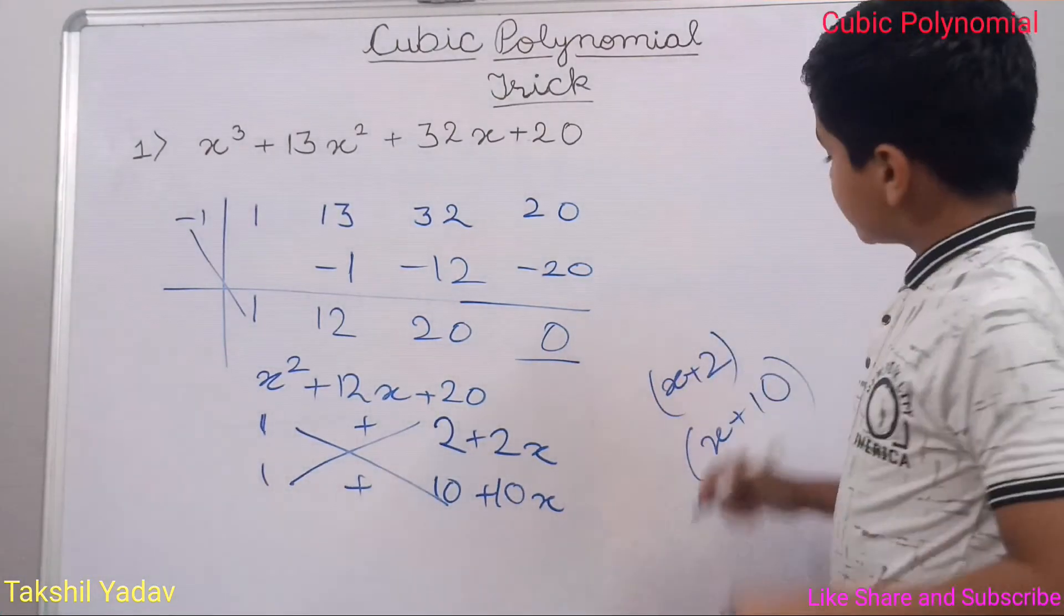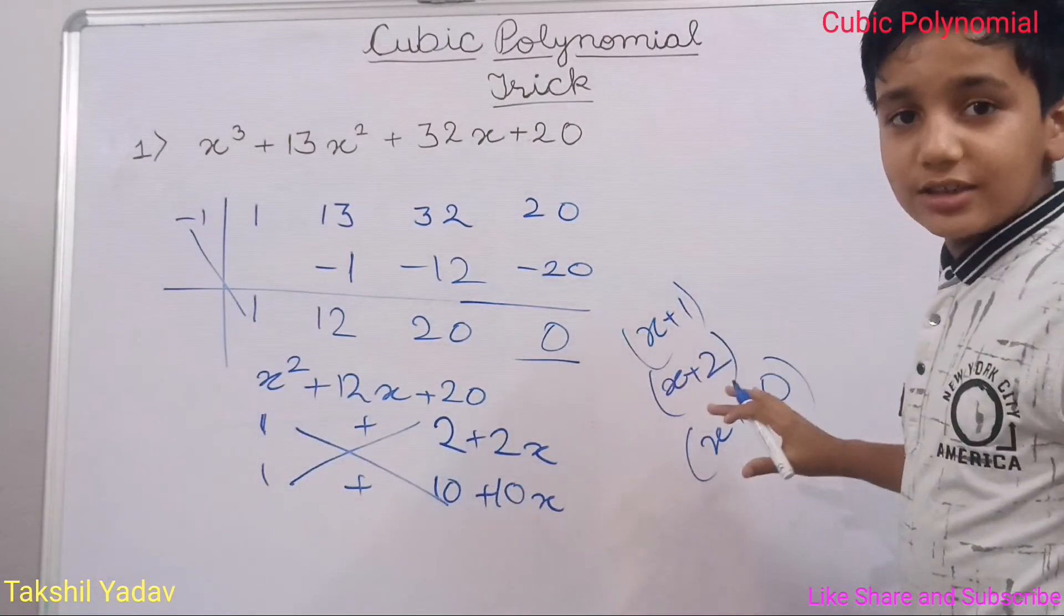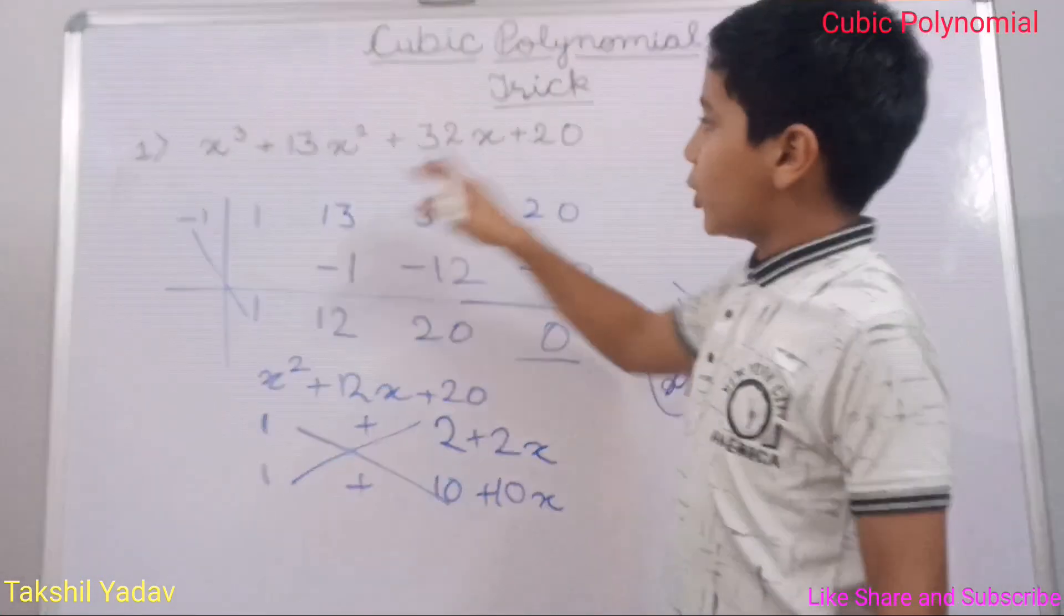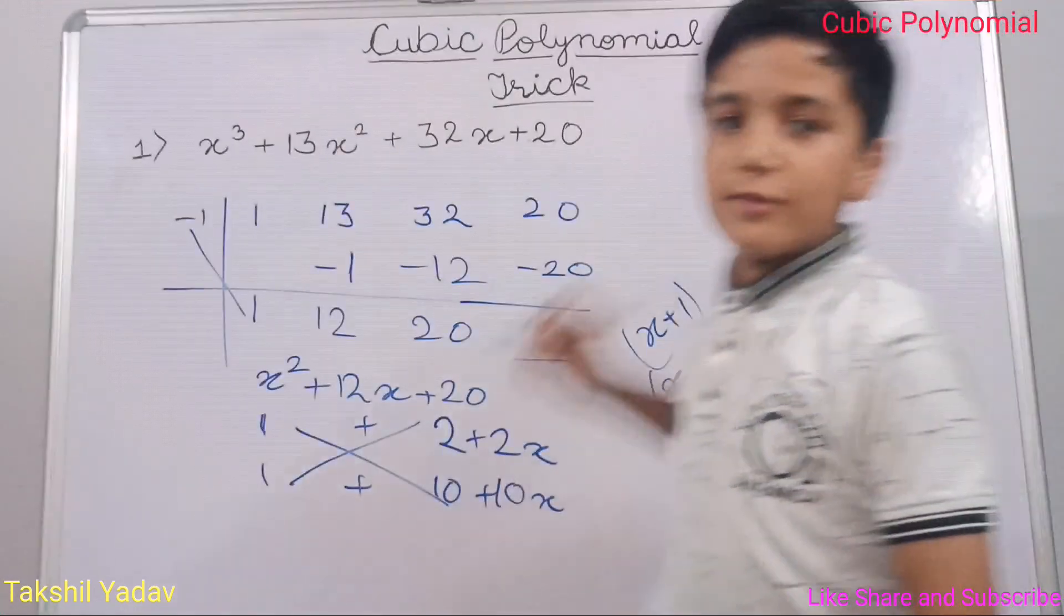And do you remember that our first factor was x + 1? So these 3 are the factors of this cubic polynomial x³ + 13x² + 32x + 20. Have a look.